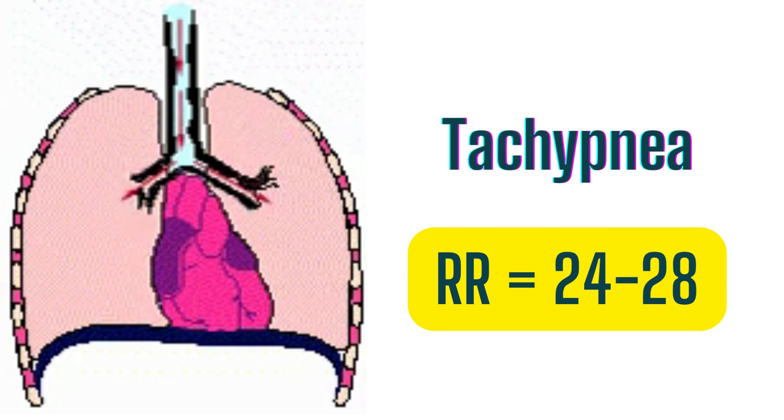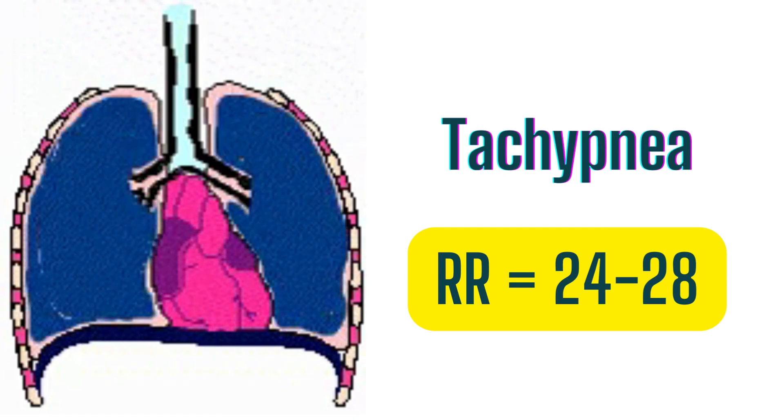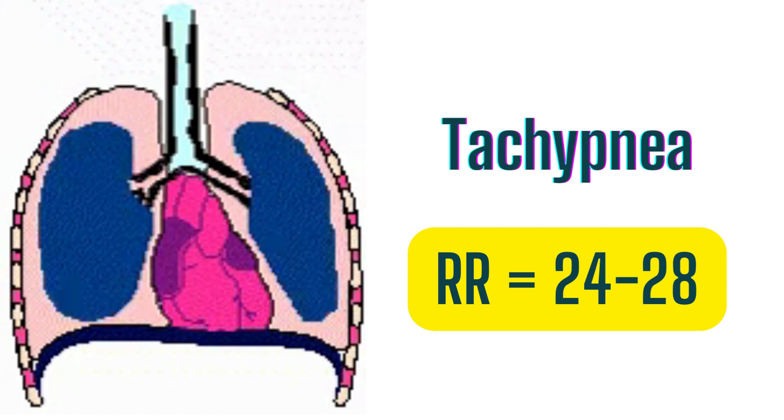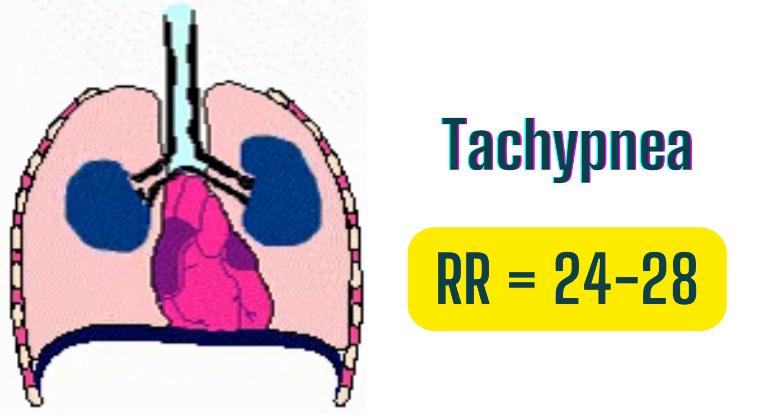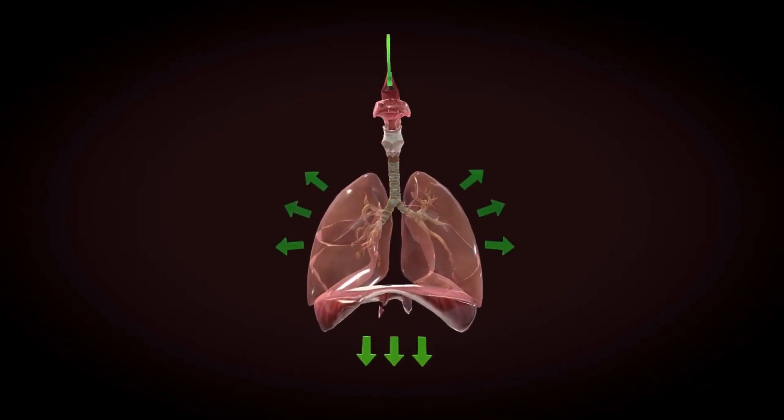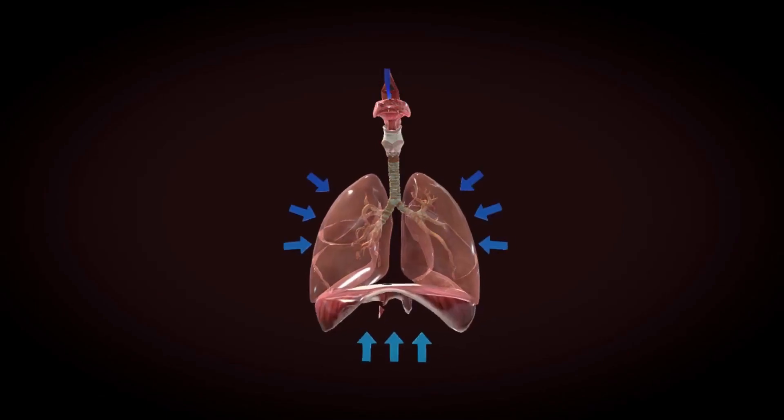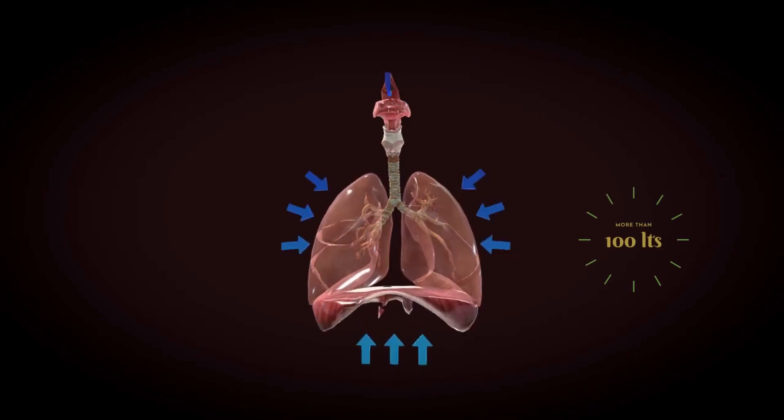When there is tachypnea, a condition in which patients breathe at a faster rate, usually in case of respiratory distress and impairment of respiratory system due to other causes, even more air pumps in. Sometimes even more than 100 liters.